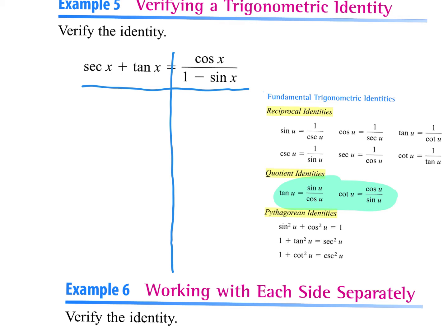In previous problems, if we had two fractions with different denominators, we got a common denominator. Well, this one doesn't have two denominators — it just has one. What did we do in previous problems to start the simplification process here? I have one minus the sine of x. It's not a Pythagorean identity where it has sine squared or anything like that. So what should I do to try and start our simplifying process?